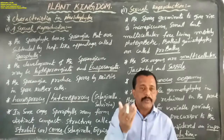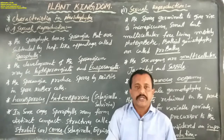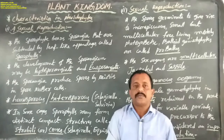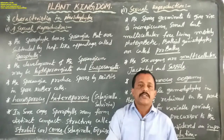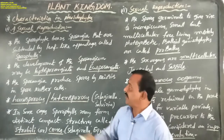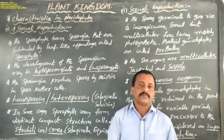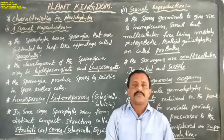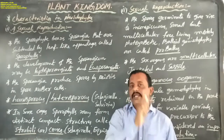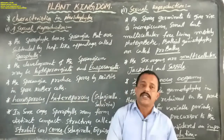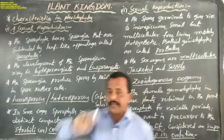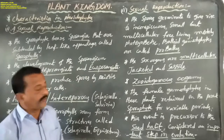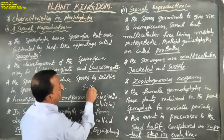The sporangia development may be leptosporangiate and eusporangiate. Leptosporangiate means the development of sporangia from a single superficial cell. Eusporangiate means the development of sporangia from a group of superficial cells.